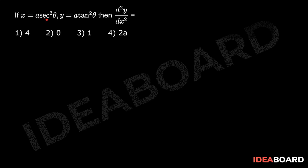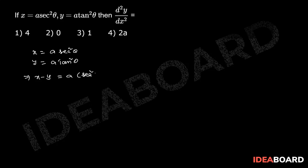If x = a·sec²θ and y = a·tan²θ, then find d²y/dx². Given x = a·sec²θ and y = a·tan²θ, that implies x - y = a(sec²θ - tan²θ). We know that sec²θ - tan²θ = 1, so x - y = a, which implies a + y = x.